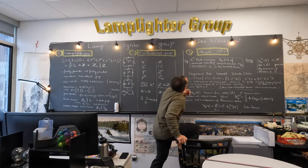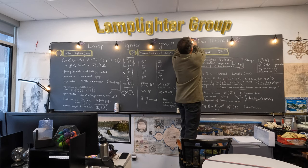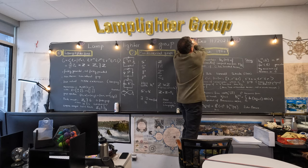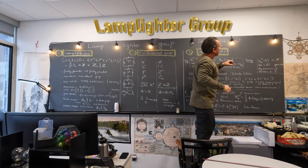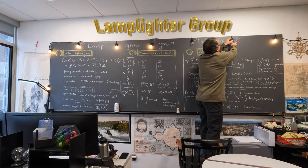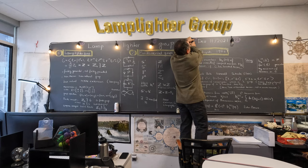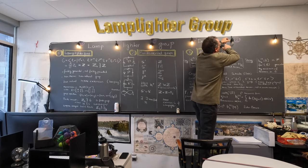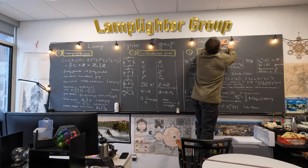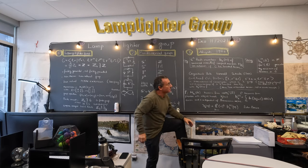I'm the Lamplighter here. So what I do is, maybe I am at this position here. I can extinguish the light, move over and extinguish the light, then move over and light the light, move over and light the light, and move over again. Then I have not changed anything.